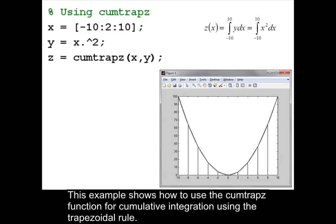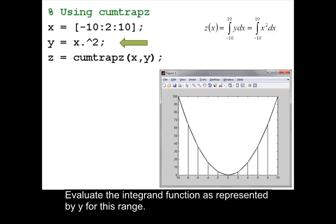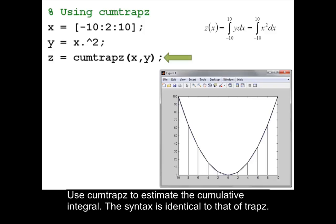This example shows how to use the trapz function for cumulative integration using the trapezoidal rule. Define the range of the integral using an increment of 2 as in the previous example. Evaluate the integrand function as represented by y for this range. Use cumtrapz to estimate the cumulative interval. The syntax is identical to that of trapz.